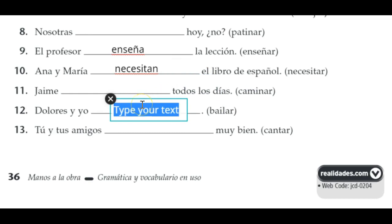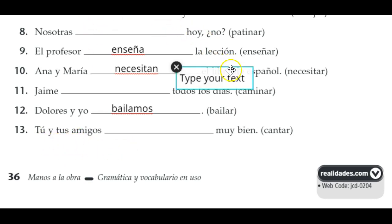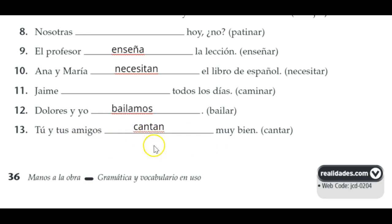Tú y tus amigos — you and your friends. When talking to you and your friends, you say 'you guys' or 'you all' — it's the plural you. In Spanish it's the same form as 'they.' Tú y tus amigos cantan muy bien — you and your friends sing really well. So it's the 'y'all' form.